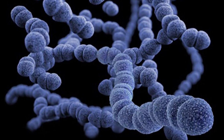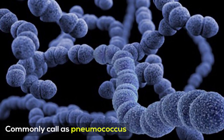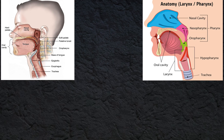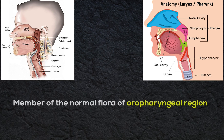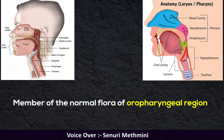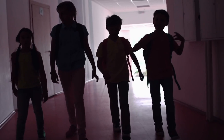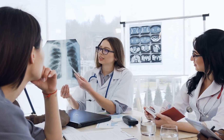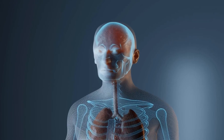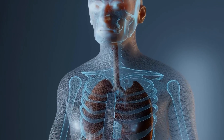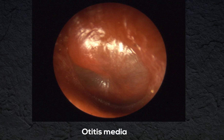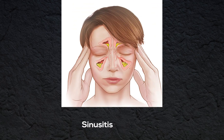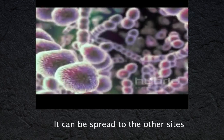Streptococcus pneumoniae is commonly called pneumococcus. S. pneumoniae is a member of the normal flora of the oropharyngeal region in five percent to seventy percent of the population. The highest isolation rate is from children. It primarily causes diseases related to the upper respiratory tract, namely otitis media, mastoiditis, sinusitis, and so on.